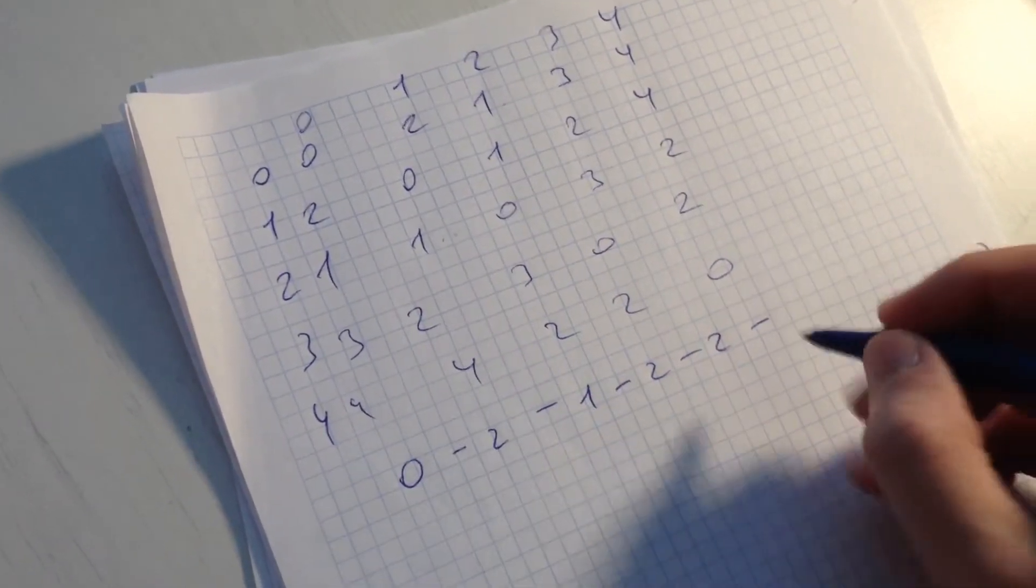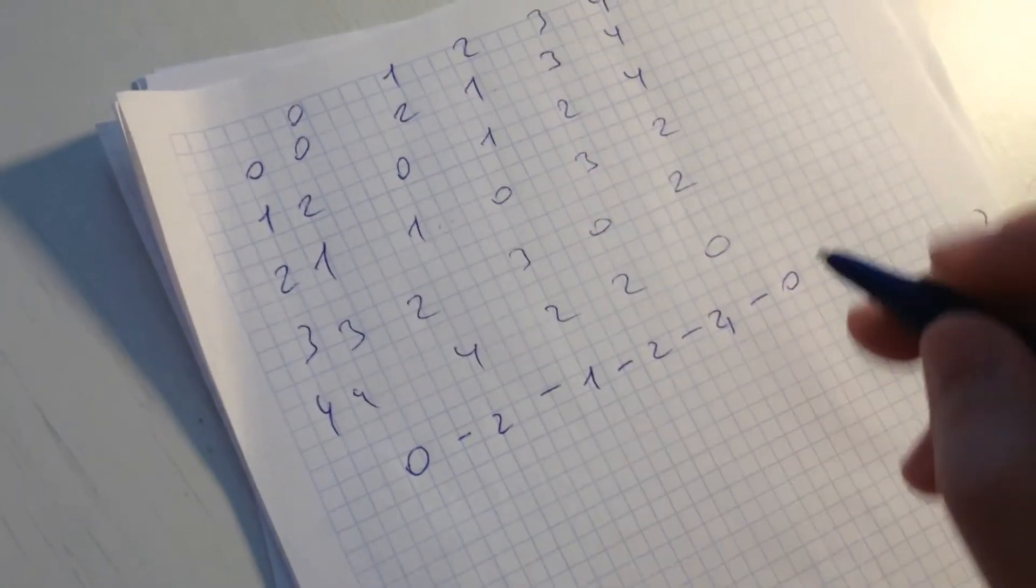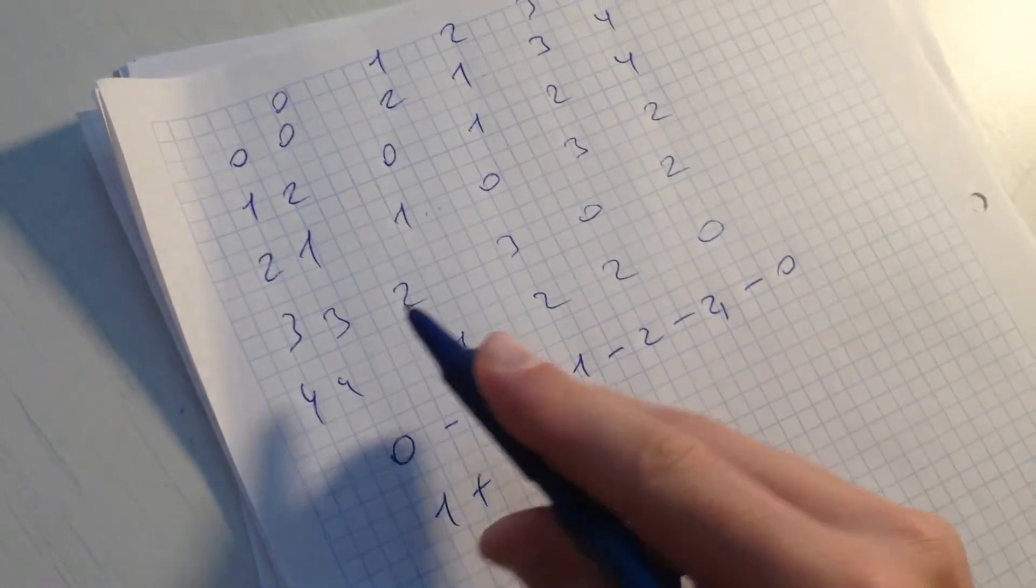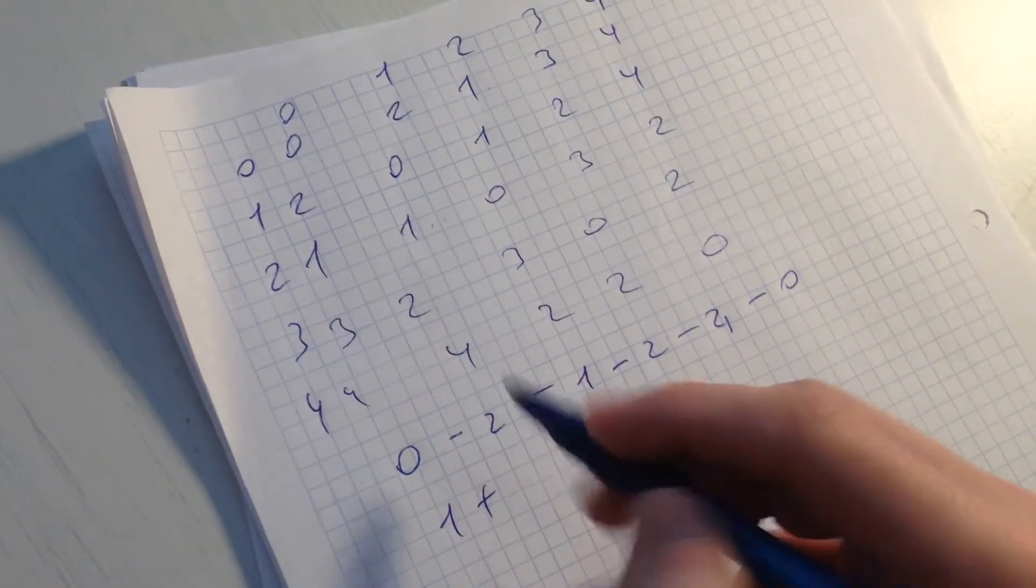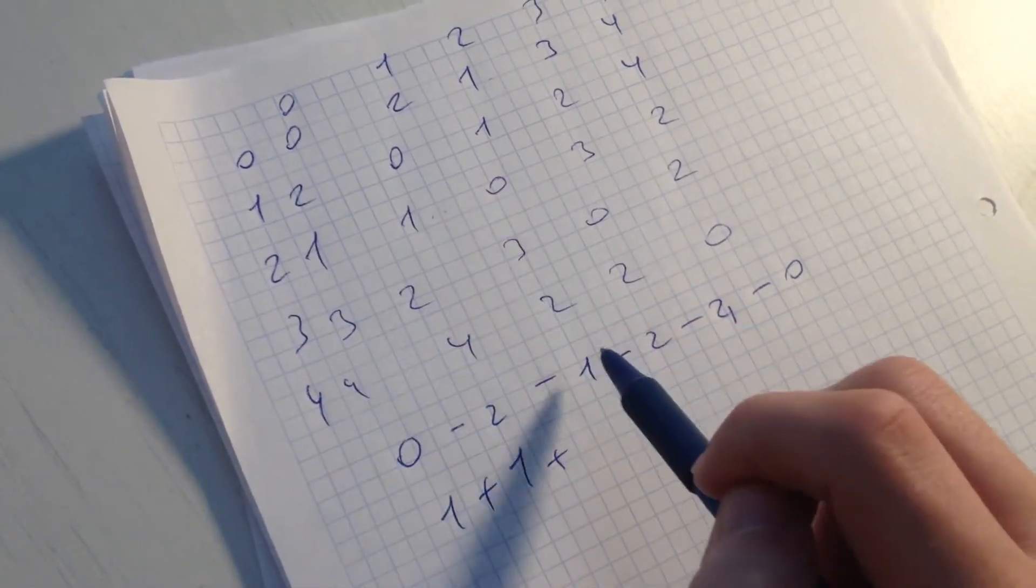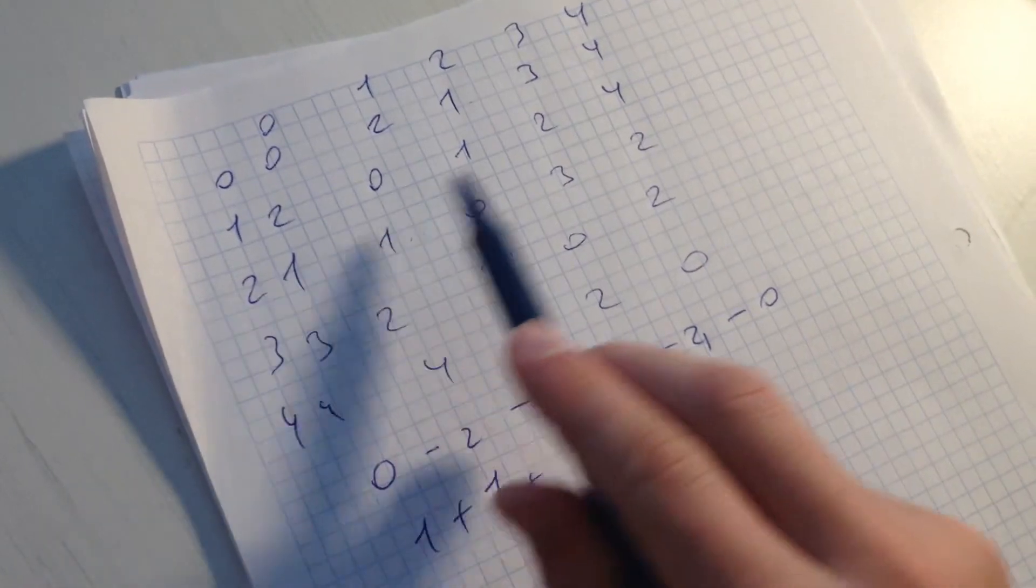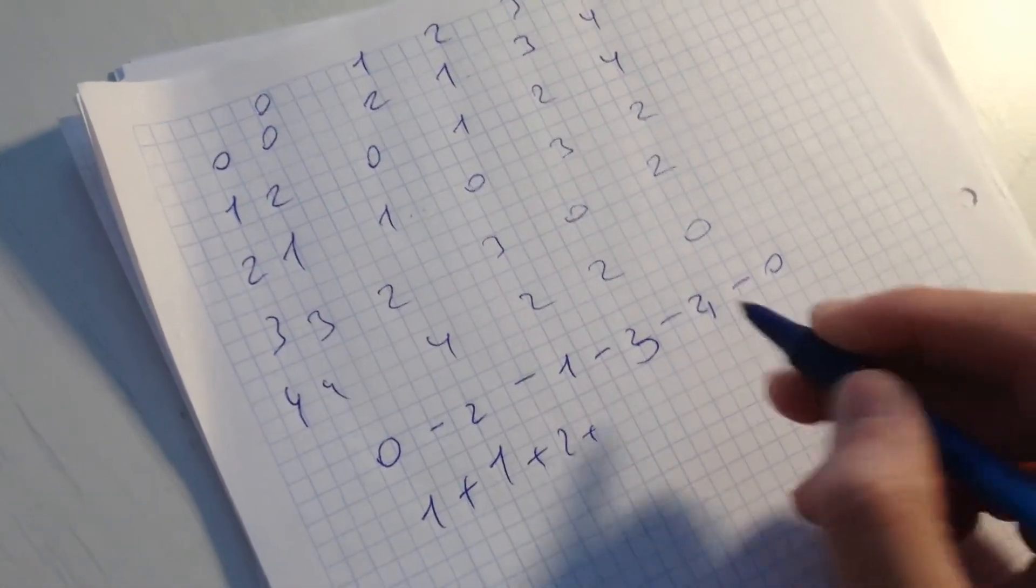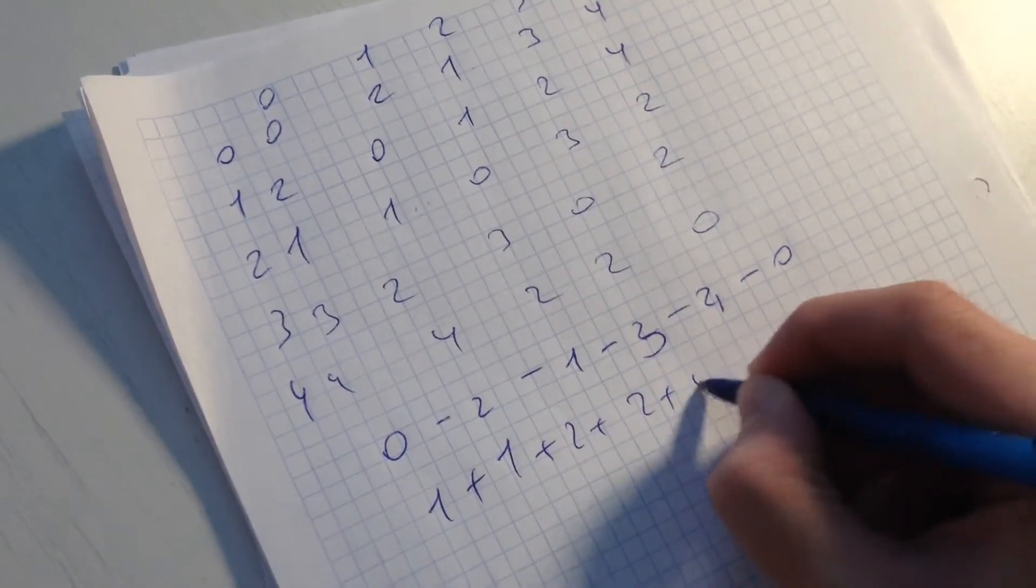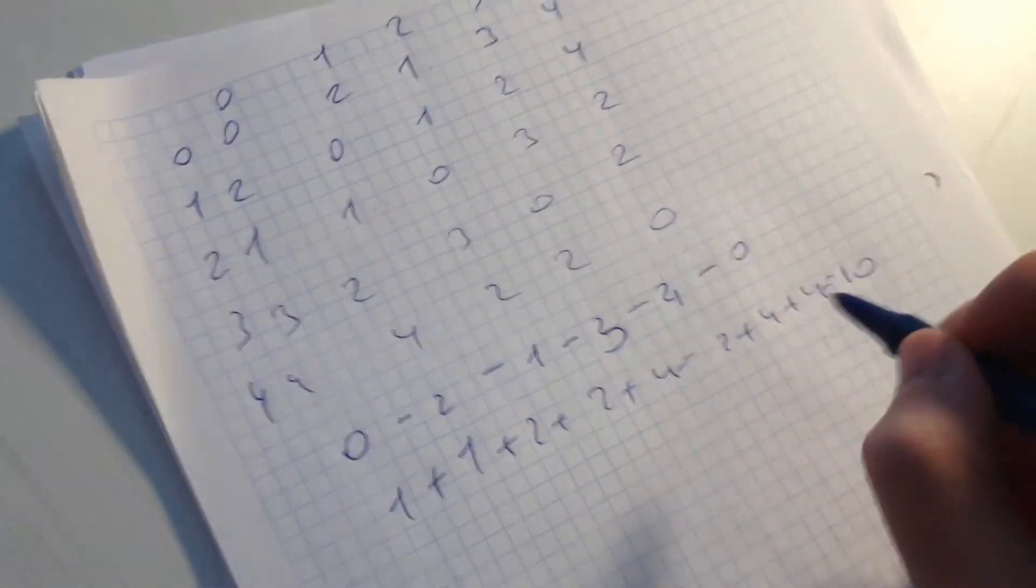And then from node 4, sorry, we go back to the depot. The cost of this algorithm is 1 plus... From node 2 is 1. From node 1 to node 3, sorry, here's also a mistake. It's 2. From node 3 to node 4 is 2. And plus 4. And it's going to be 2 plus 4 plus 4. It's going to be total 10.